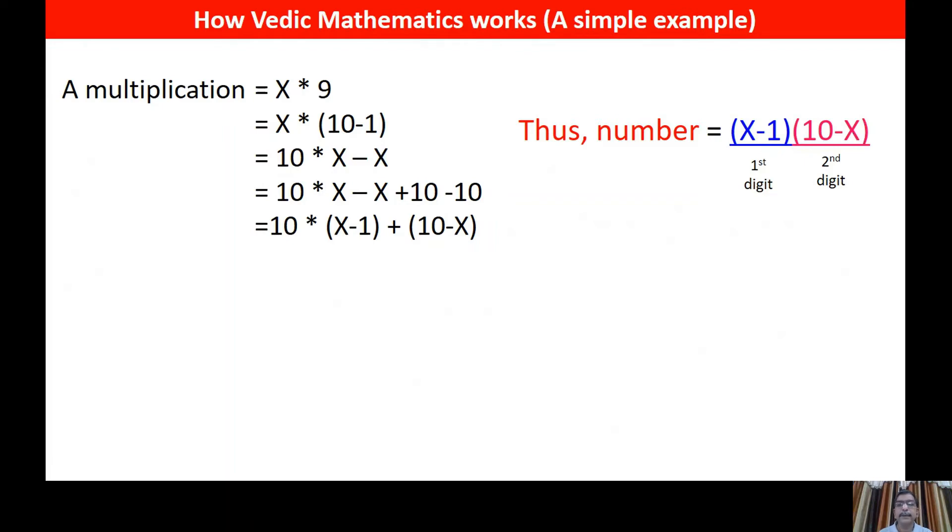So what the number becomes? The first digit becomes X minus 1 and the second digit becomes 10 minus X. So if we go to examples, for example, 1 into 9 equal to, suppose 1 is X. So this X minus 1 it becomes 0. 10 minus X, 10 minus 1 equals 9. 1 into 9 equal to 09.